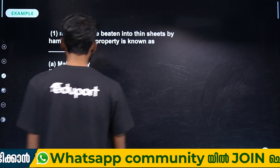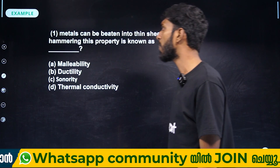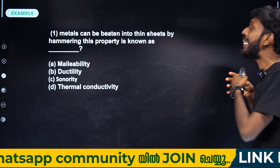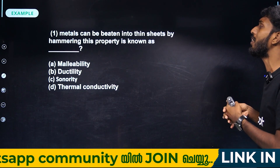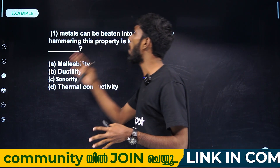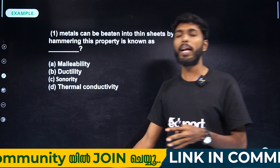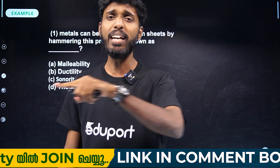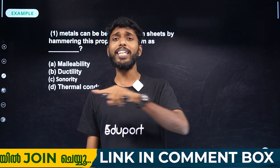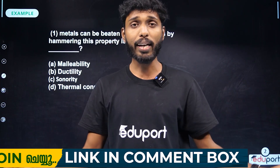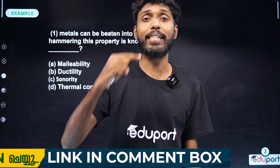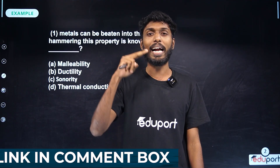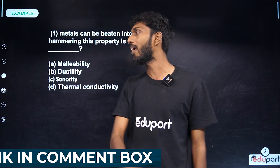Metal can be beaten into thin sheets by hammering. This property is known as malleability — beating metal into a thin sheet. These two are different things.